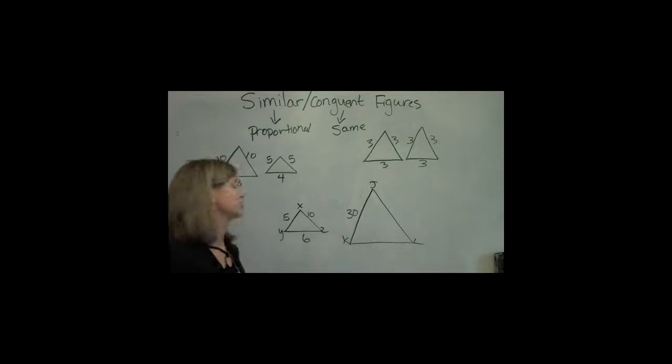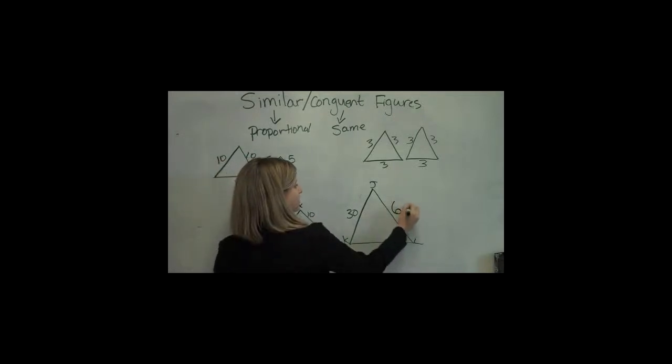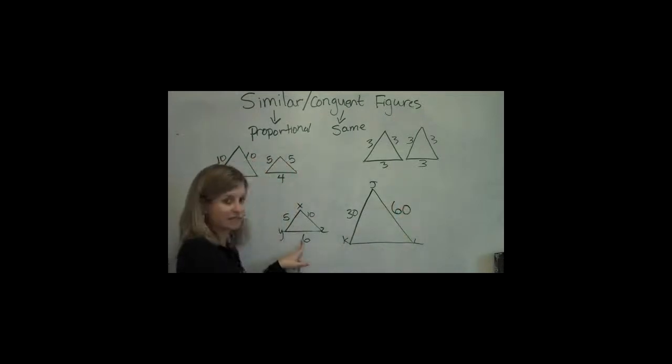Figure out what the scale factor is. This went from 5 to 30. So 5 times 6 would be 30. So 10 times 6 would be 60, and 6 times 6 would be 36. So that's how I can figure out the rest of the triangles.